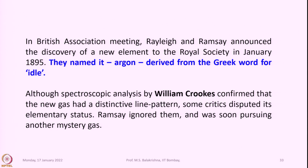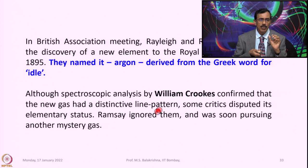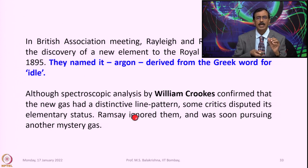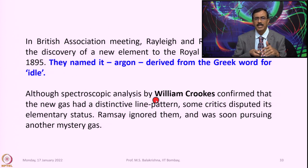They named it Argon, derived from the Greek word for 'idle.' Although spectroscopic analysis by William Crookes confirmed that the new gas had a distinctive line pattern, some critics disputed its elementary status. Ramsey ignored them and was soon pursuing another mystery gas.